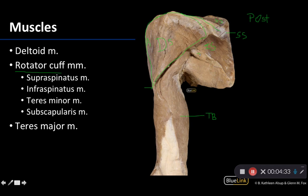The most difficult one to identify is the teres minor. As its name suggests, it is smaller than the teres major, which is certainly the case on this specimen. In some dissections and individuals it's really difficult to tell the difference between the infraspinatus and the teres minor; you need a nice clear division between the muscles to confirm that the infraspinatus is always superior to the teres minor.